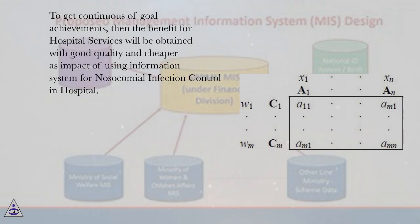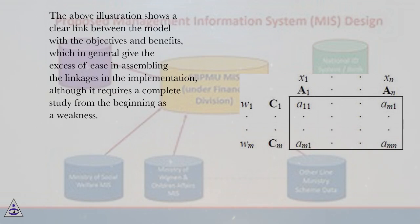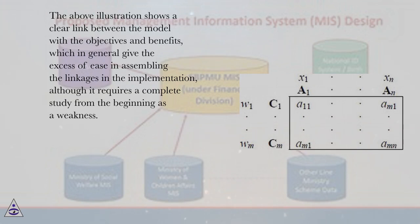To get continuous goal achievements, the benefit for hospital services will be obtained with good quality and cheaper cost as an impact of using the information system for nosocomial infection control in the hospital. The above illustration shows a clear link between the model, its objectives, and benefits, which in general gives excessive ease in assembling the linkages in the implementation, although it requires a complete study from the beginning as a weakness.